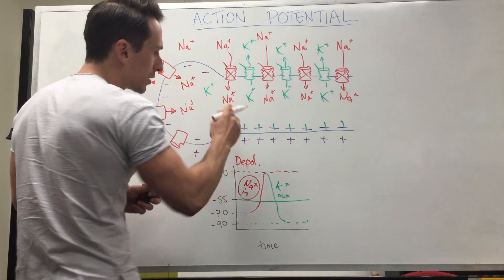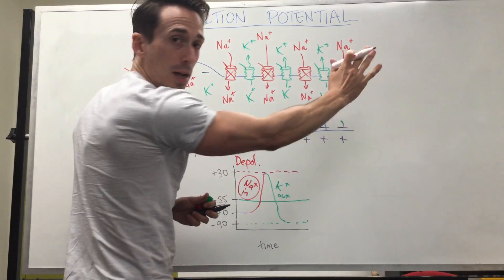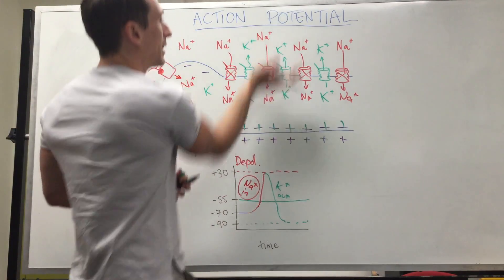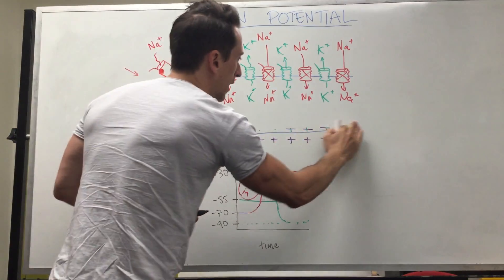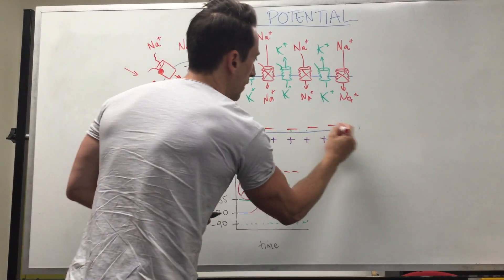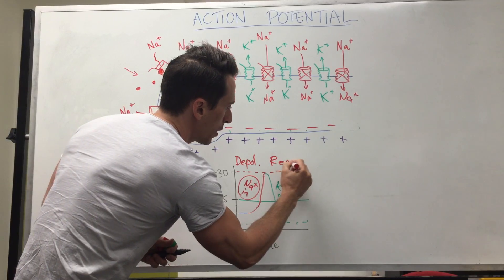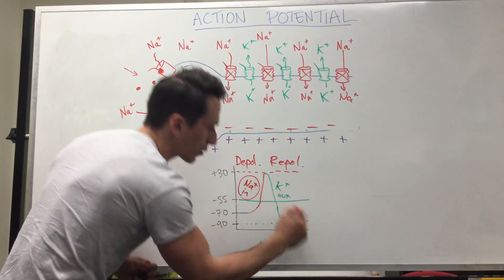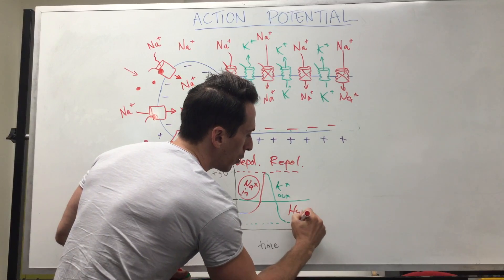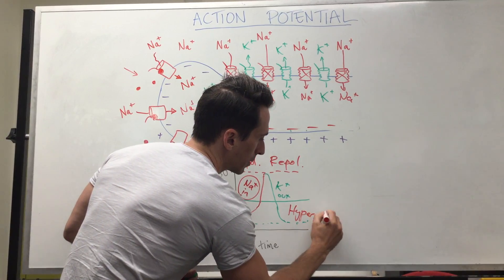Then it hits +30 and the sodium channels shut. Then potassium channels open and potassium leaves the cell, making it negative again inside the cell. That's called repolarization. So when potassium goes out that's called repolarization, and so much potassium goes out that it hyperpolarizes the cell.